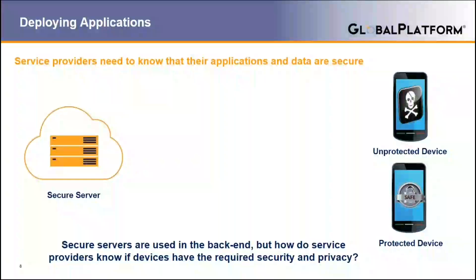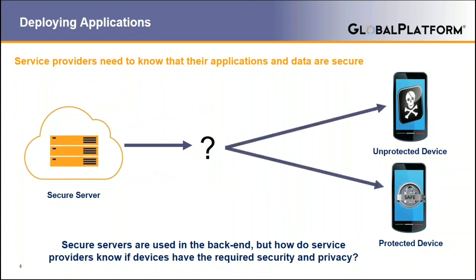So, while deploying some online services, you might find a part which is going to be on the server side and the client part, which is going to run on the user device. It's important for the service provider to know that their applications and data are secure end-to-end against attacks. On the server side, this can be ensured by protecting the backend, and it is usually in a controlled environment. But on the device side, on the client side, this is where the service provider will have to have more information about the device — is it an unprotected device or is it a protected device? Does it provide some security and privacy, yes or no?